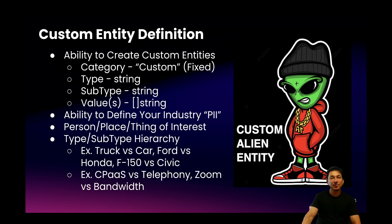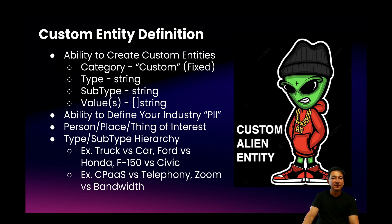Pre-canned entities provided by the Symbol platform are great, but there are probably entities that are specific to your business or domain that you operate in. To handle those use cases, the platform allows you to create your own custom entities by providing a type, subtype, and values that describe your custom entity. This gives you the ability to define your own personal identifiable information, sensitive identifiers, or items of interest. More importantly, this functionality can be used to receive notifications for persons, places, or things of interest for your business when these custom entities are mentioned.